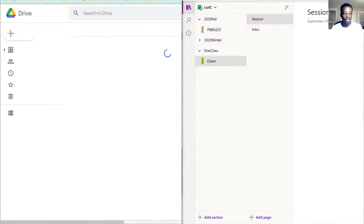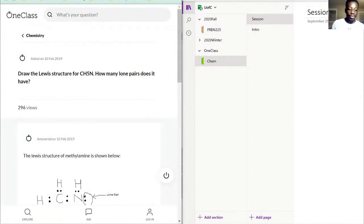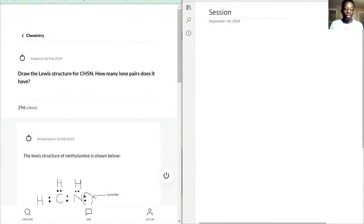And now with that, let's hop straight into our lesson for today, starting with question one. So we should be seeing it here. And the first question is just to draw the Lewis structure for CH5N. So let's begin, shall we?